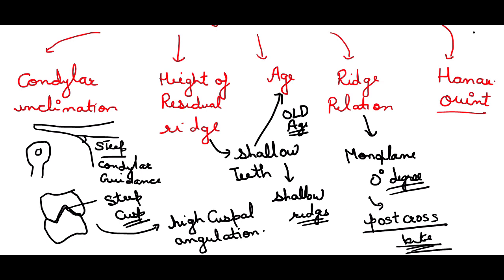Hanau's Quint is a concept in prosthodontics that considers factors including condylar guidance, incisal guidance, cusp height, ridge relation, and compensating curve. This quint can guide the selection of tooth form and occlusion design to achieve functional and aesthetic outcomes.